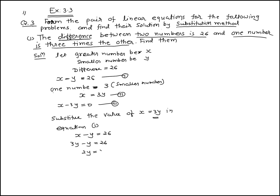Since x equals 3y, we get 3y minus y equals twenty-six, so two y equals twenty-six, therefore y equals twenty-six divided by two, which gives y equal to thirteen.